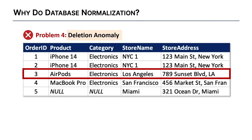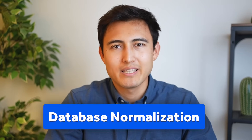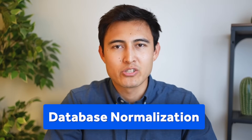The final problem is deletion anomaly, which happens when you delete a single record and that unintentionally removes important data. For example, if we deleted the AirPods row and all the data is stored in this one table, we lose all records of having AirPods as a product. Now that we've identified the major errors, we clearly need a better structure — and that's where data normalization comes in.